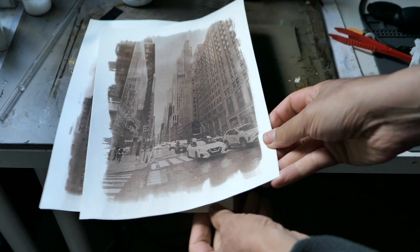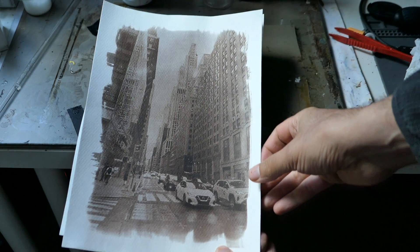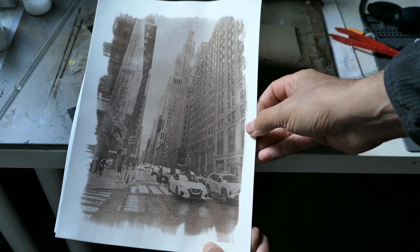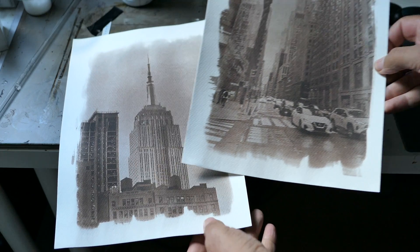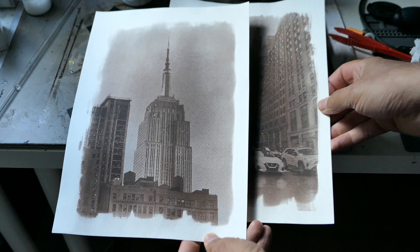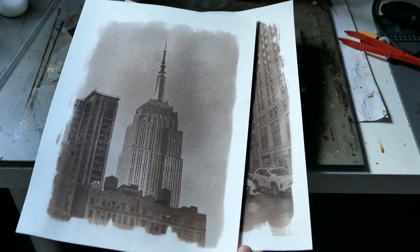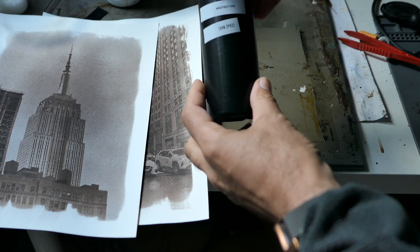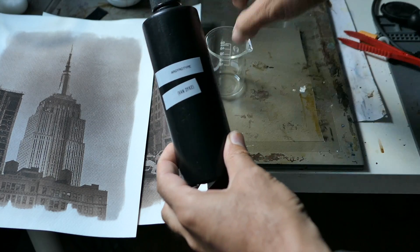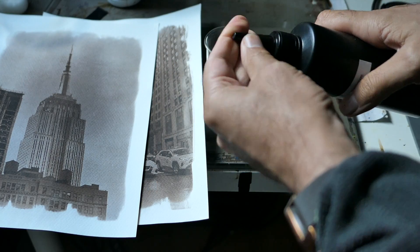Argyrotype is an alternative photographic process similar to the Van Dyke process. It was invented in 1991 by Mike Ware. It uses silver and iron salts to create sepia-toned photographs. The images produced are durable and resist aging well, making it a popular choice for photographic artworks.